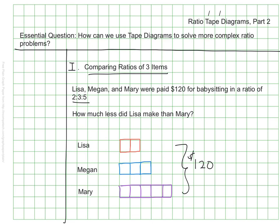What I can see now is that there are 10 total rectangles and they together make $120 so I know that it's 120 divided by my 10. Each rectangle is going to be worth $12. So that's part of it, right?